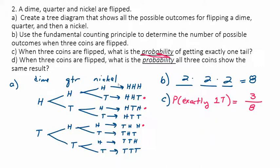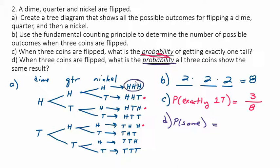Try part D — pause and see if you can figure it out. When three coins are flipped, what's the probability that all three coins show the same result? Check the sample space: all heads or all tails. That's two outcomes out of eight, so the probability is 2/8 which reduces to one-fourth.